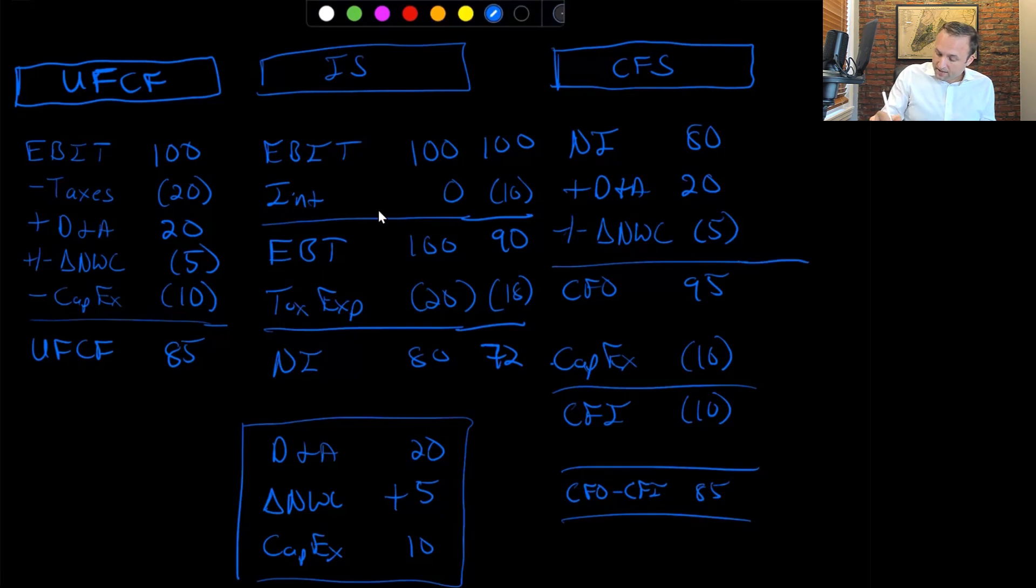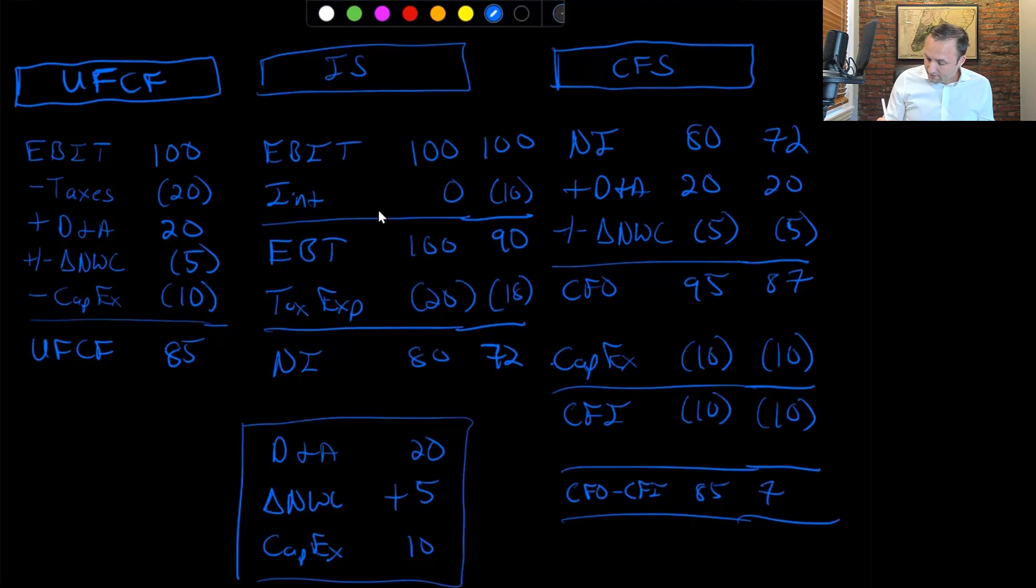Now over on the cash flow statement, if I start with that $72, everything else after net income is the same. So it's going to be $20. It's going to be negative $5. We now have $87 here. From there, we're going to go down and pull out the same exact capex, same exact CFI as a result. And what we end up with here is $77 of CFO minus CFI.